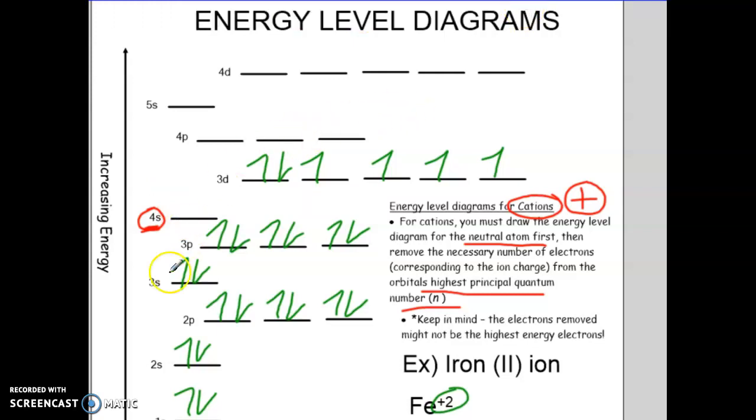So this right here, this electron, pardon me, the energy level diagram here would be representing iron positive 2. We remove those two electrons right there. Now, when you're drawing this, you're probably wondering, well, do I just skip this or do I show it blank? You have to show that this is blank. So you would have your 3p full, a blank 4s, and then 3d with your six electrons that are a leftover up there.